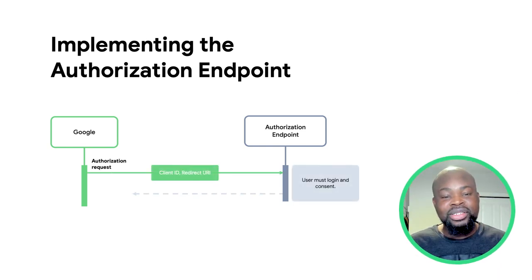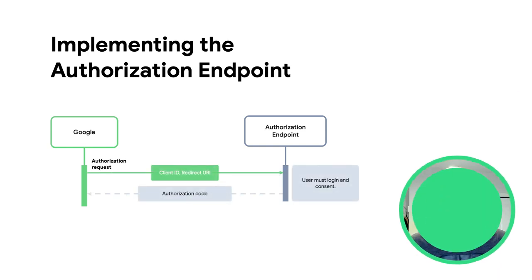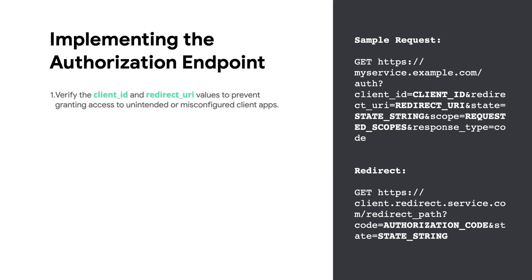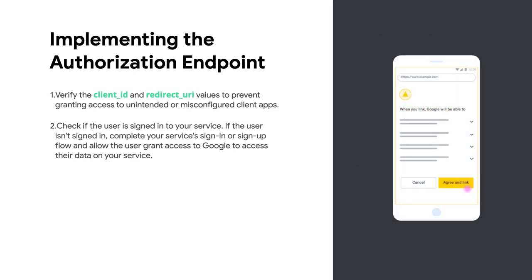First, let's look at implementing the authorization endpoint. Google sends a request to your authorization endpoint, which looks something like the sample on the right. For your authorization endpoint to handle authorization requests, it should do the following: verify the client ID and redirect URI values to prevent granting access to unintended or misconfigured client applications. Check if the user is signed into your service — if the user isn't signed in, complete your service sign-up or sign-in flow and allow the user to grant access to Google to access their data on your service.